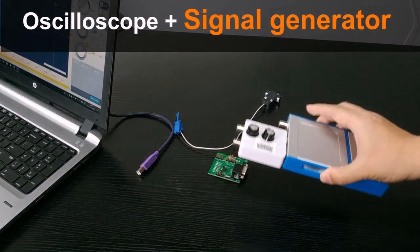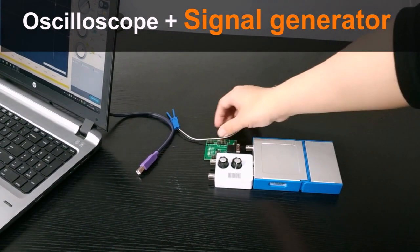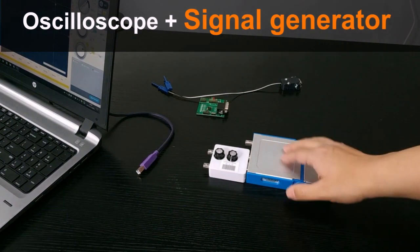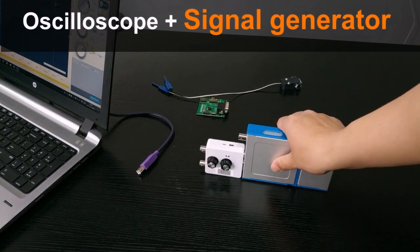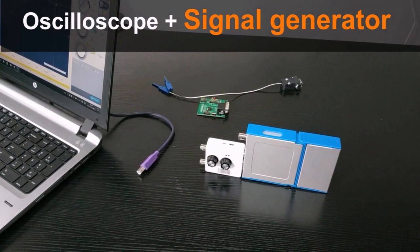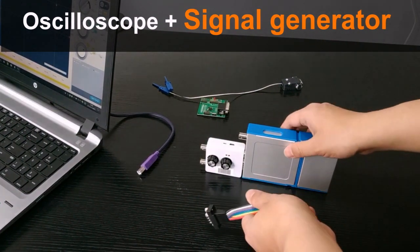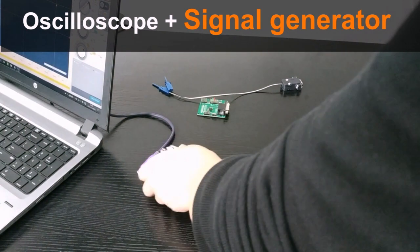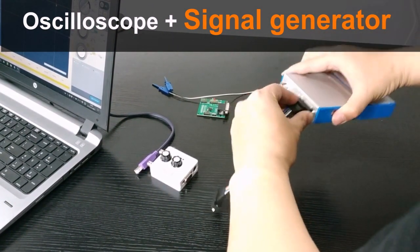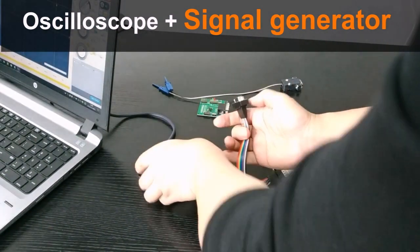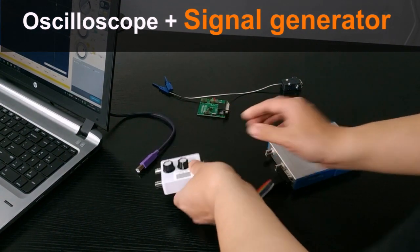By connecting this module directly to the oscilloscope, we can see that the channel 2 is covered by the module. But actually this module has two BNC connectors. One is the output signal and the other BNC connector is the input line for the channel 2 that we are going to pass to the oscilloscope through the interface.